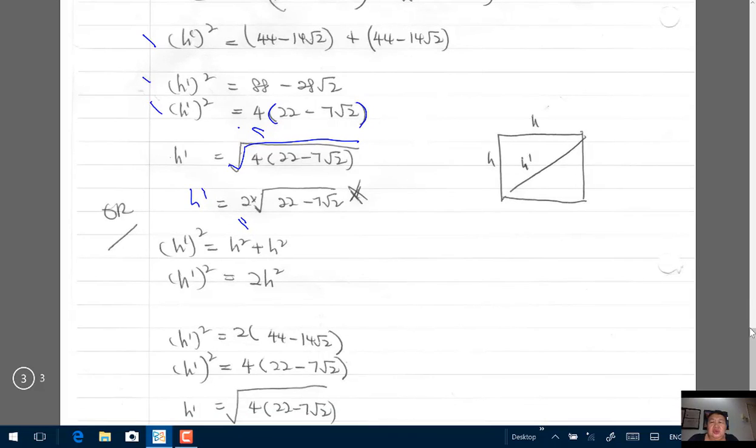Or you could use this simple idea which I like, representing it in a different form. I call the sides h and h. So by Pythagoras, h squared plus h squared equals h1 squared.